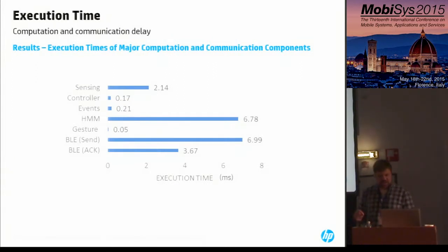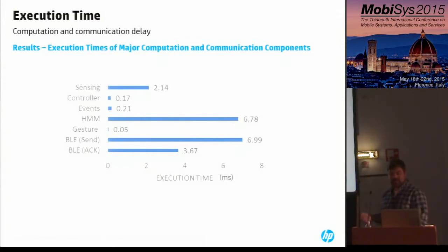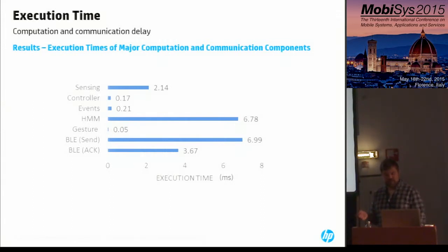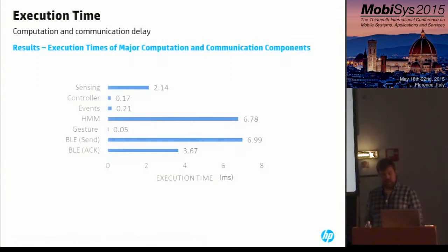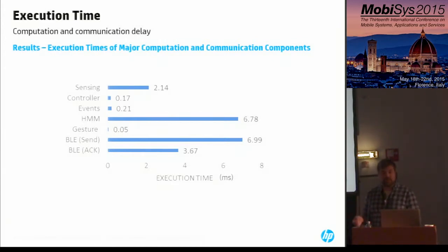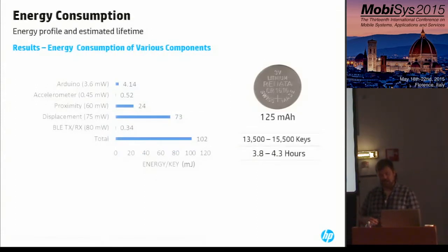This figure shows the measured execution time of the seven major system components. Among all computational modules, the hidden Markov model classification uses the highest execution time at around 7 milliseconds, and combining all other tasks, total computation time remains less than 10 milliseconds. The Bluetooth Low Energy send operation itself consumes 7 milliseconds — this is the duration between when the machine learning module generates a key event and when the radio sends it. An additional 4 milliseconds is needed to get the acknowledgement back, giving an overall end-to-end execution time of about 20 milliseconds per keystroke.